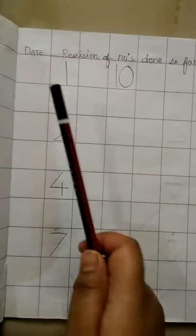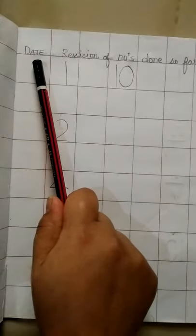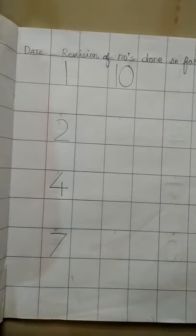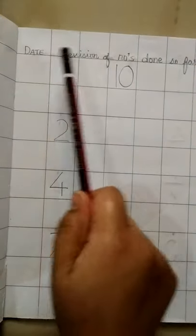Understood? So here our date comes. Then revision of numbers done so far is our topic. So parents are requested to write the date and the topic.